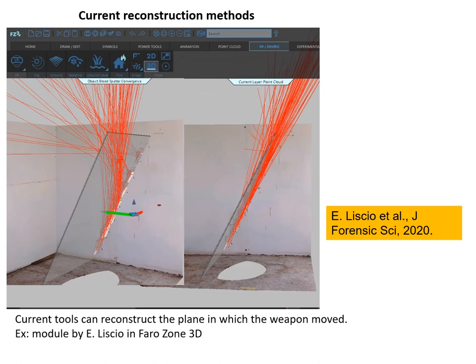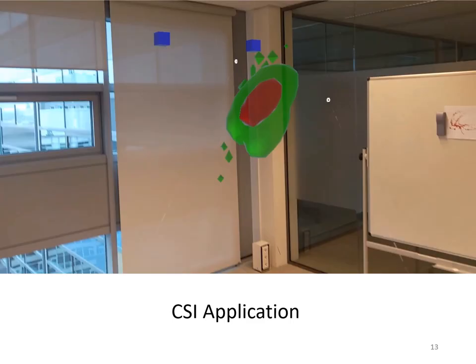So what's available right now? Pretty much not much. When people see linear patterns of stains, they say there's a high chance it's a cast-off pattern. There is some software — for example, a module for Leica produced by my friend Eugène Lissiot — where you identify the plane in which the weapon was moving. But today there are no methods to directly reconstruct the motion of a weapon from inspection of a cast-off pattern.